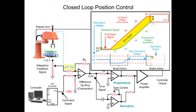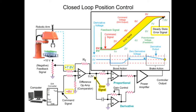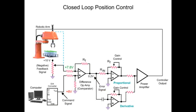As the arm continues in motion, the feedback voltage is nearing the command voltage. The error signal from the difference op-amp is also decreasing, and as a result, the arm motor speed decreases. Friction and mass of the robotic arm contribute to the system negatively where the robotic arm fails to reach the desired position. With a reduced error signal due to feedback voltage and command voltage not being equal, a steady state error condition exists. In this condition, the difference op-amp creates a steady voltage and the arm continues to move.